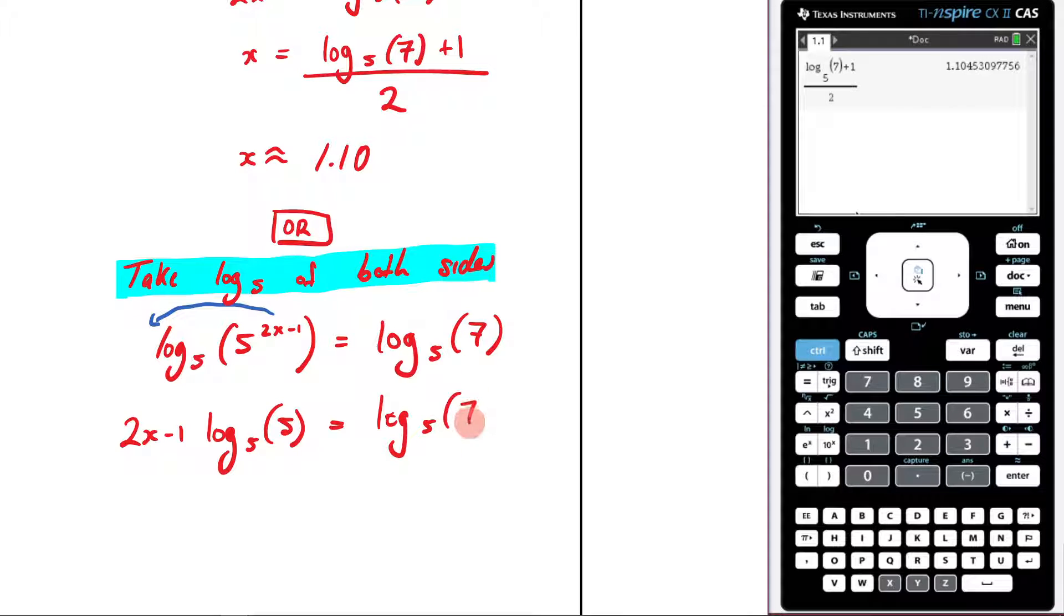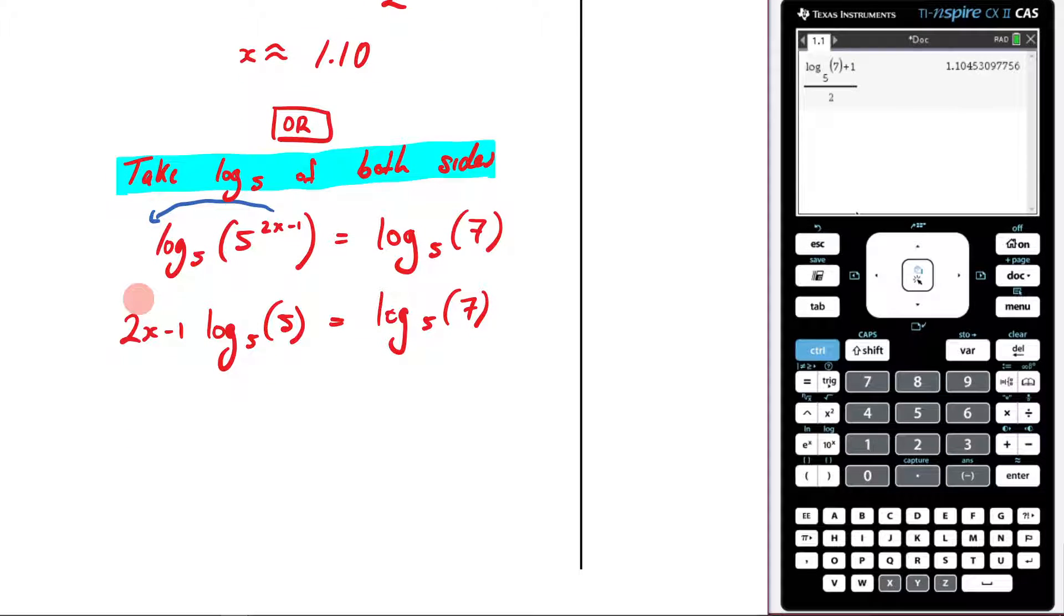The reason why is because now log 5 of 5 is just 1, so that leaves me with just 2x minus 1 here. Because would you agree that 5 raised to the 1 is just 5? So this whole thing just goes to 1, which means I'm just left with 2x minus 1 there. And now I've got log 5 of 7.